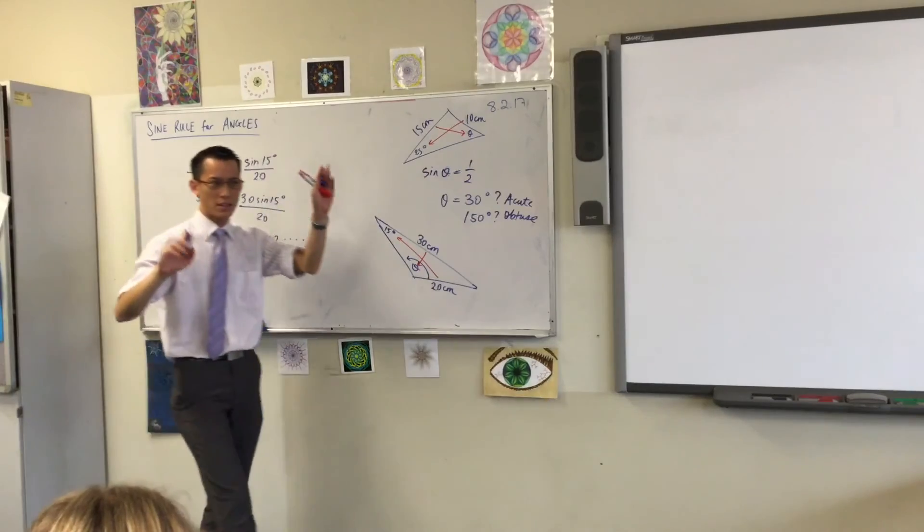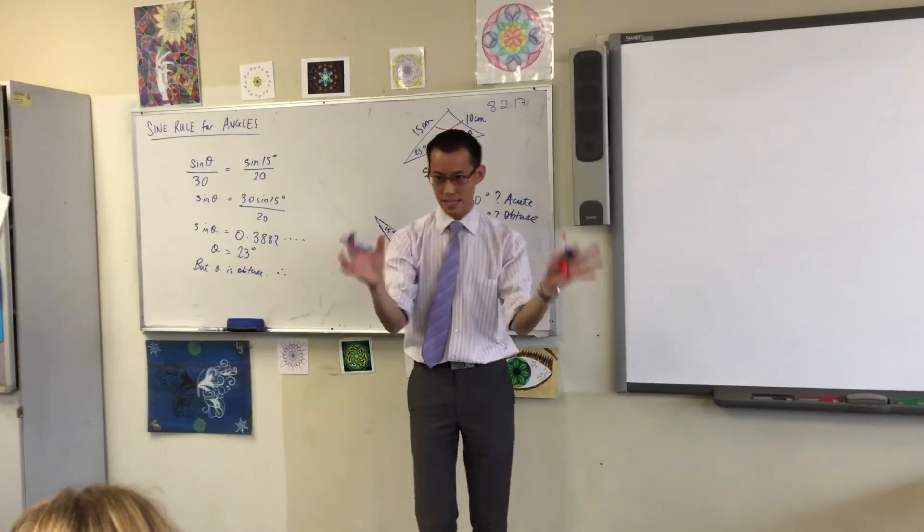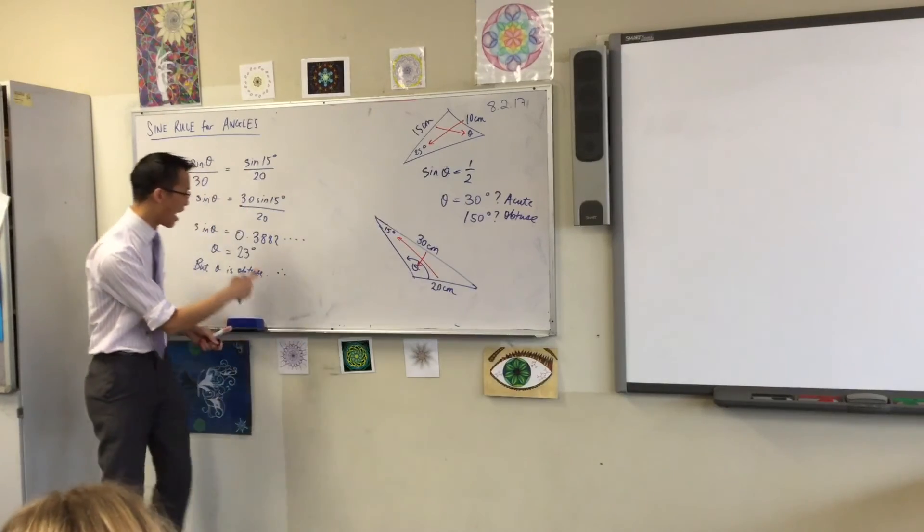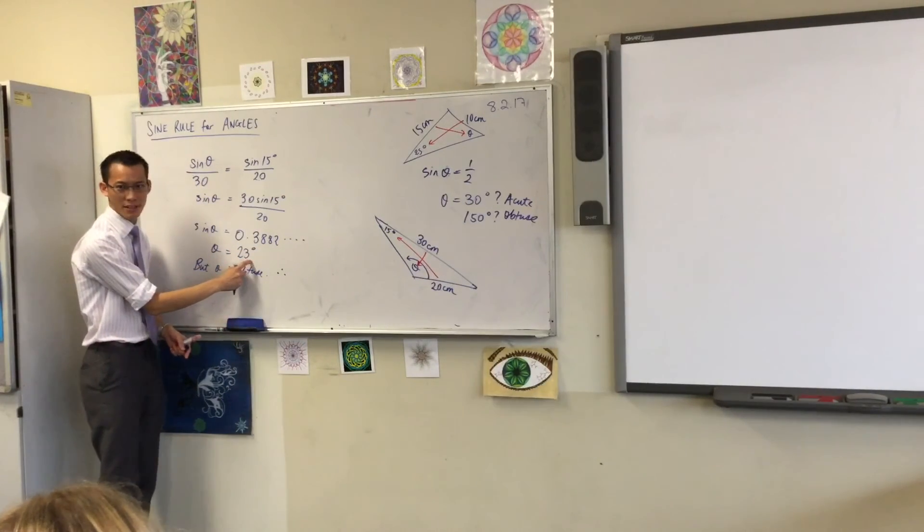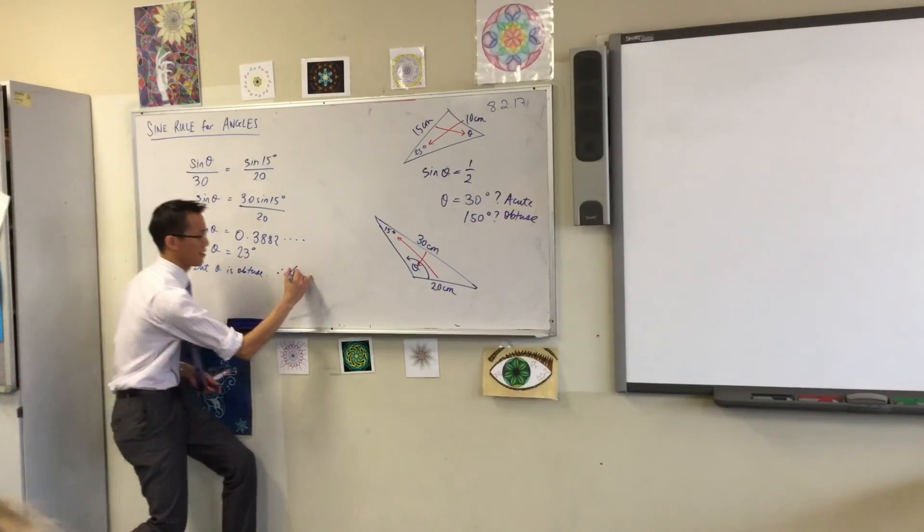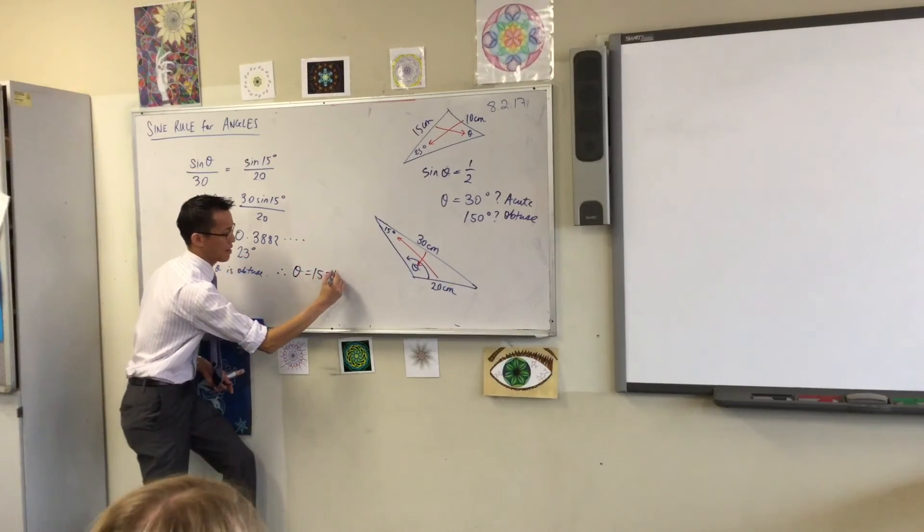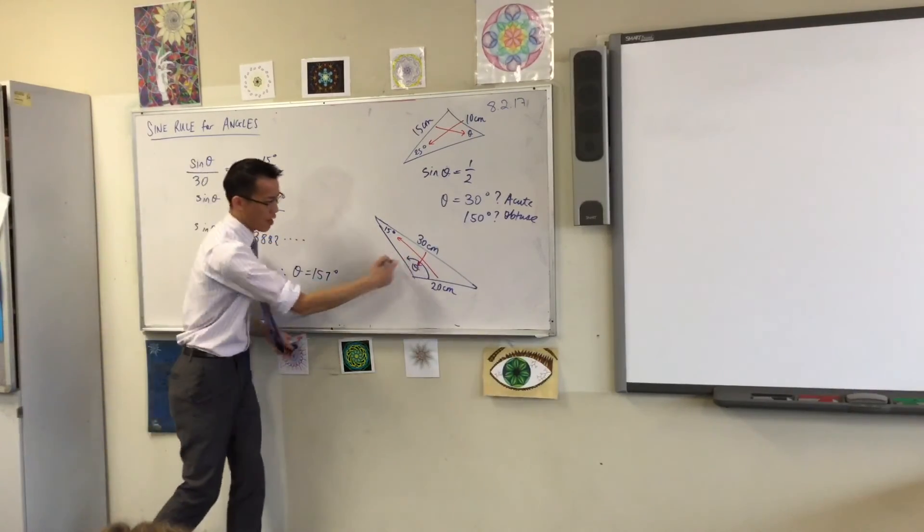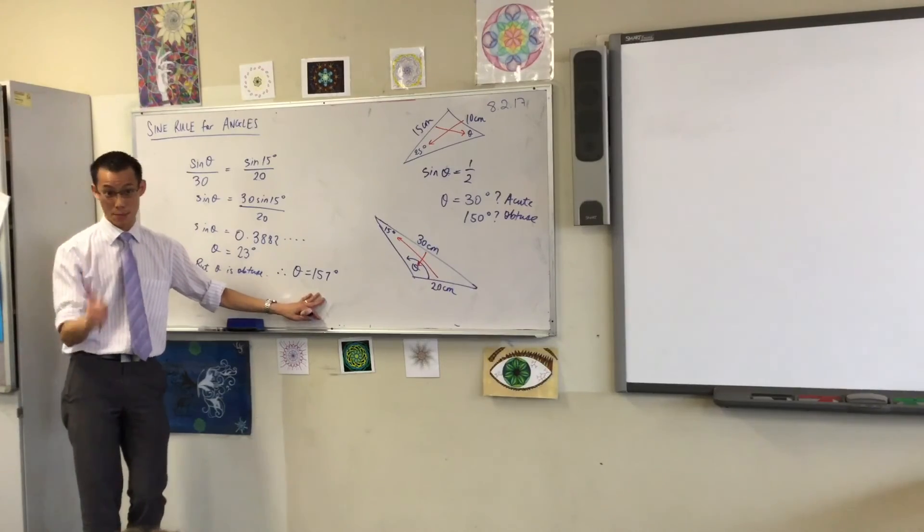Either this question will flat out tell you in words, or the diagram will be very, very clear. Therefore, remember 30-150, 45-135, etc. They add together to make 180. So, I need the angle that's on the other side. What do I add to this? 157. That's the real angle. And that looks a little more healthy, doesn't it? It's really wide. Of course it is. 157 fits the bill.